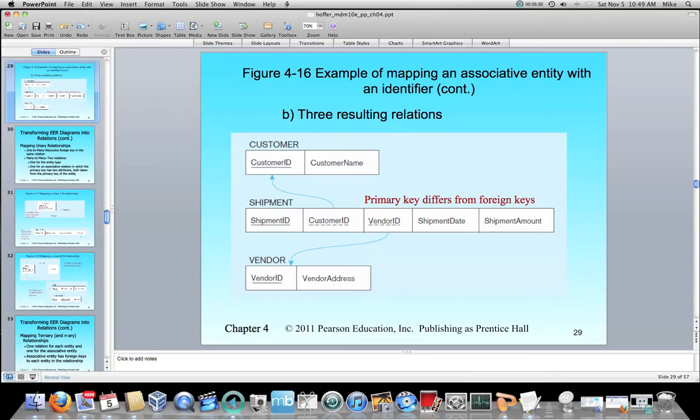All right, so those are the two different ways of handling an associative entity. This example with the shipment ID is really not used that often. It's much more common to have an associative entity simply use the combination of the foreign keys to be the primary key. All right, and that is the end of my video lecture on transforming associative entities into relations.